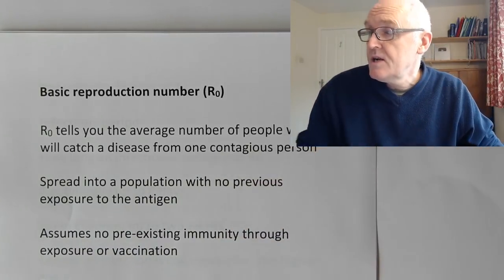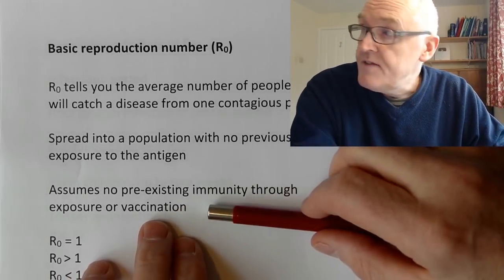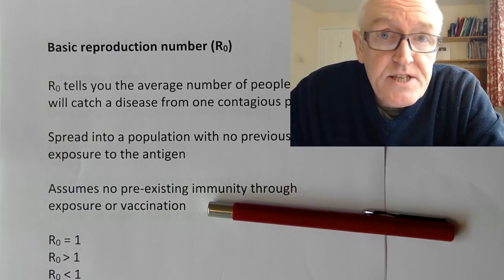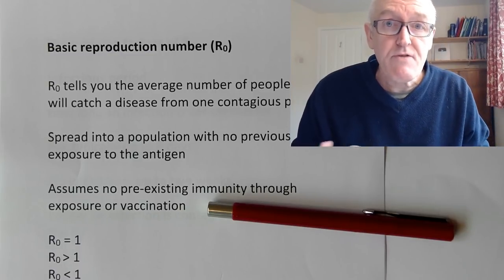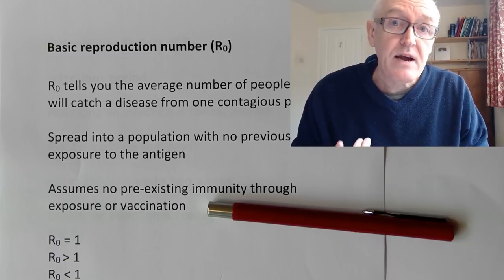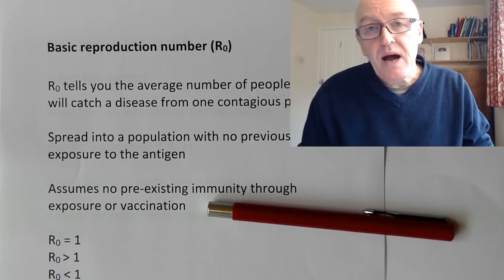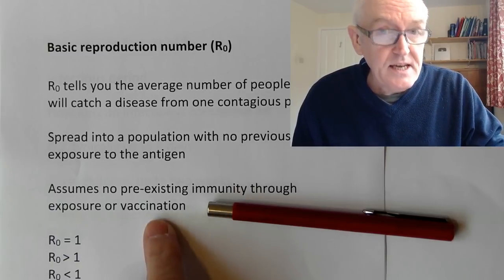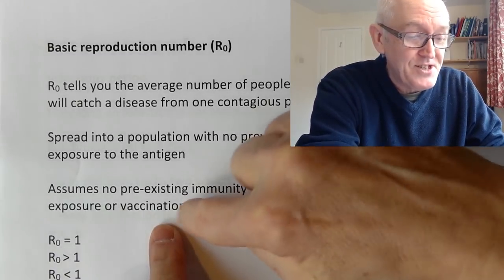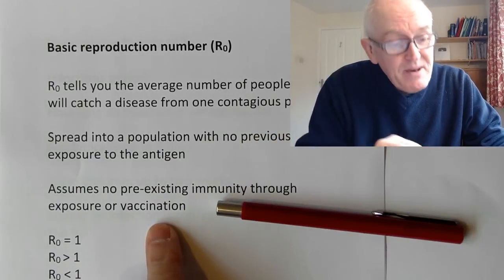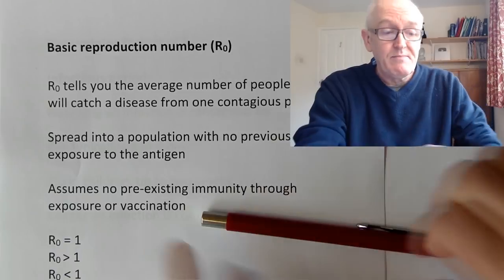We're assuming people have not been exposed to the antigen — so assuming no pre-existing immunity through exposure or vaccination. There are two ways to acquire specific immunity: one is by suffering the infection, and the other is being vaccinated. The whole point of vaccination is that we get the antibodies and immunity without having suffered the disease. The vaccine can be attenuated versions of the disease that won't make us sick, stimulating the body to make antibodies, so when the real virus or bacteria comes along, the body recognizes it.